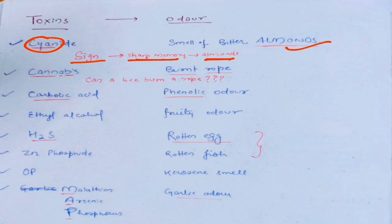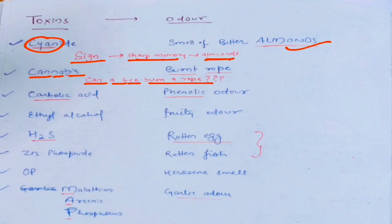The second one is cannabis. Break 'cannabis' into 'can-a-bee.' So: can a bee burn a rope? Suppose a bee is sitting on a rope and you're wondering if that bee can burn it. In cannabis poisoning, you see a burnt rope smell. Say the line a few times and you will get it.